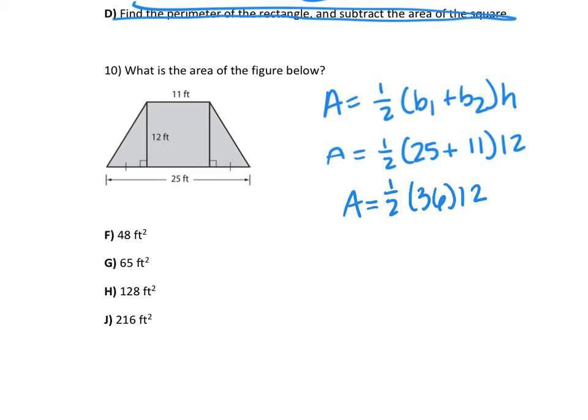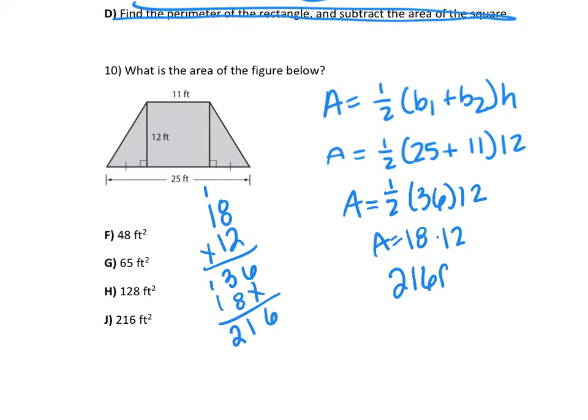And then half of 36 is 18. 18 times 12. I've got 216, so the area is 216 feet squared, which is answer choice J.